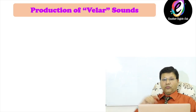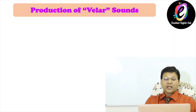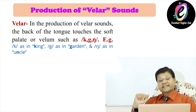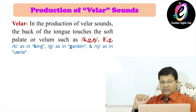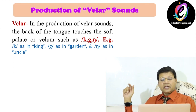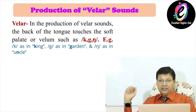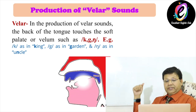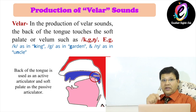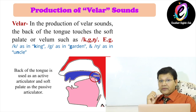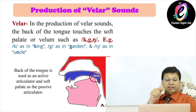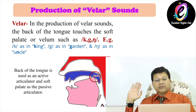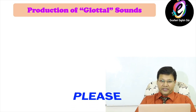Next: production of velar sound. In the production of velar sound, the back of the tongue touches the soft palate or velum — for example /k/ as in 'king', /g/ as in 'garden', and /ng/ as in 'uncle'. In the picture you will see these sounds are produced with the help of the back of the tongue and the soft palate. The back of the tongue is the active articulator and the soft palate is the passive articulator.